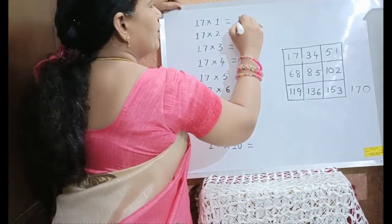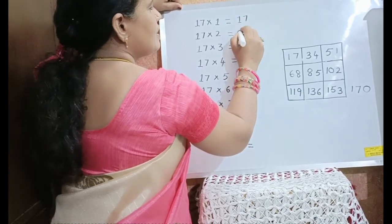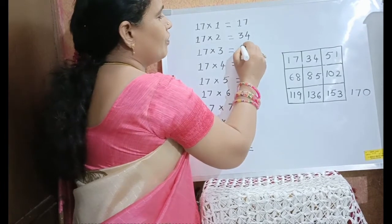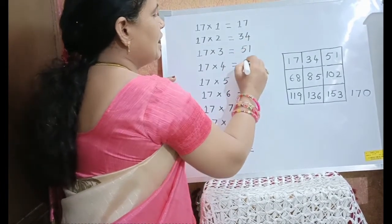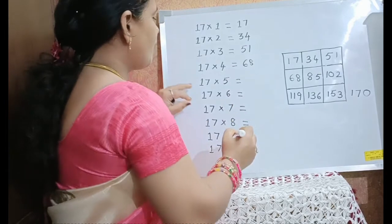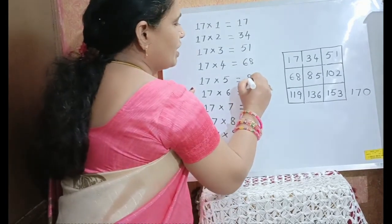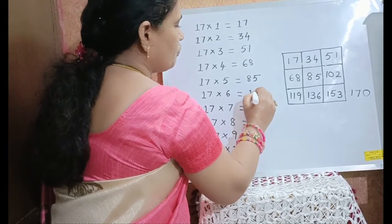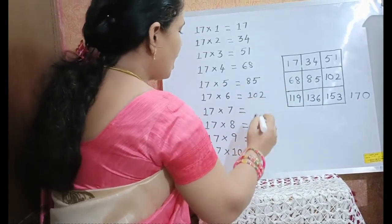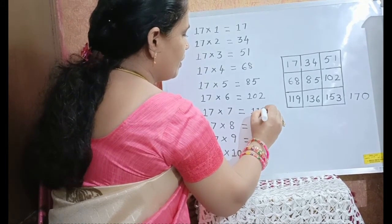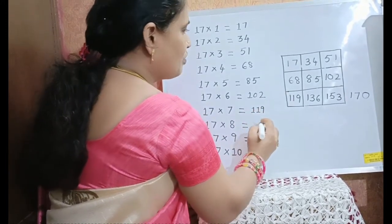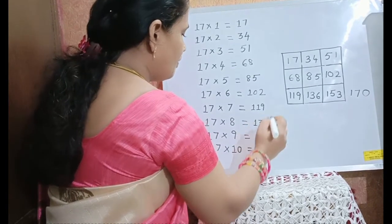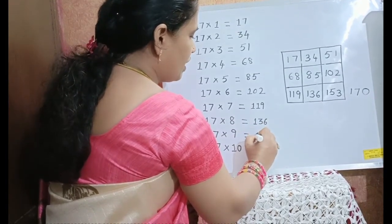17 times 1 is 17, 17 times 2 is 34, 17 times 3 is 51, 17 times 4 is 68, 17 times 5 is 85, 17 times 6 is 102, 17 times 7 is 119, 17 times 8 is 136, 17 times 9 is 153.